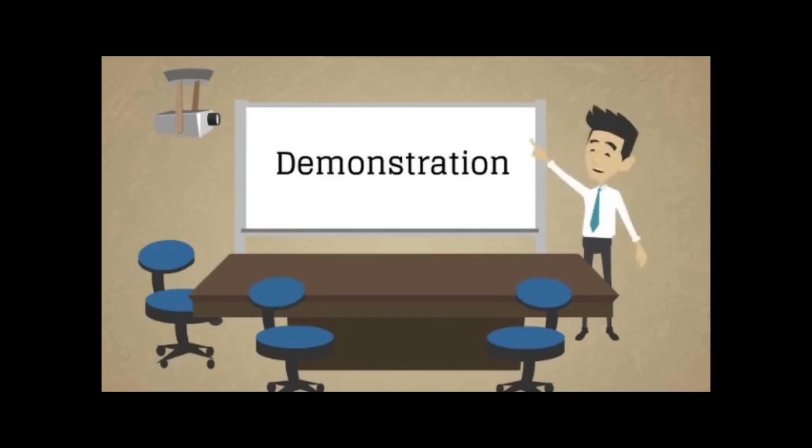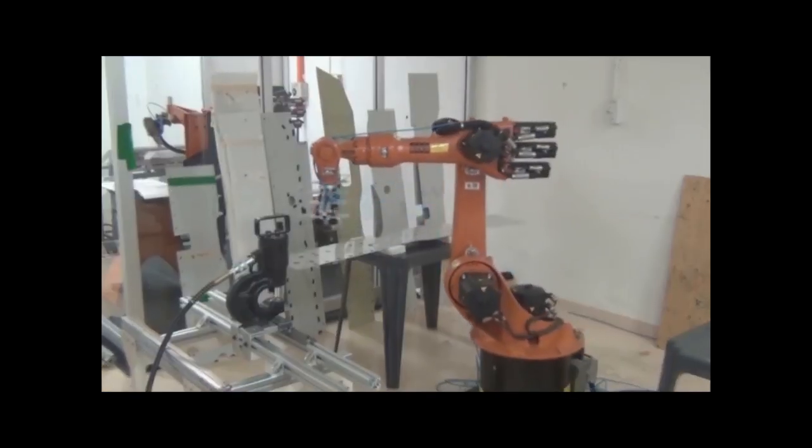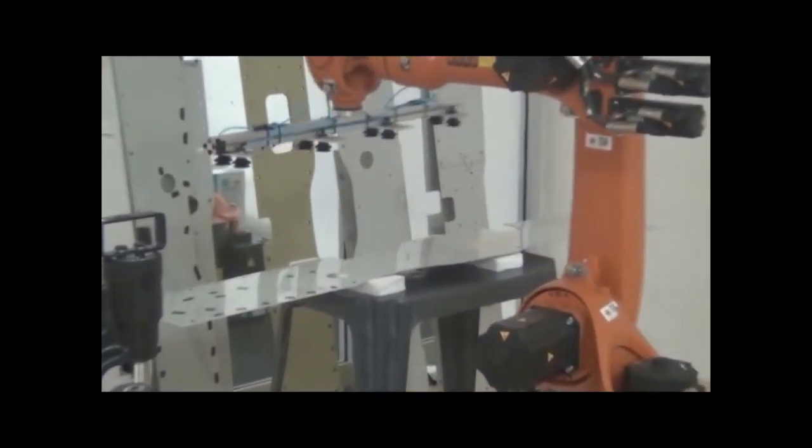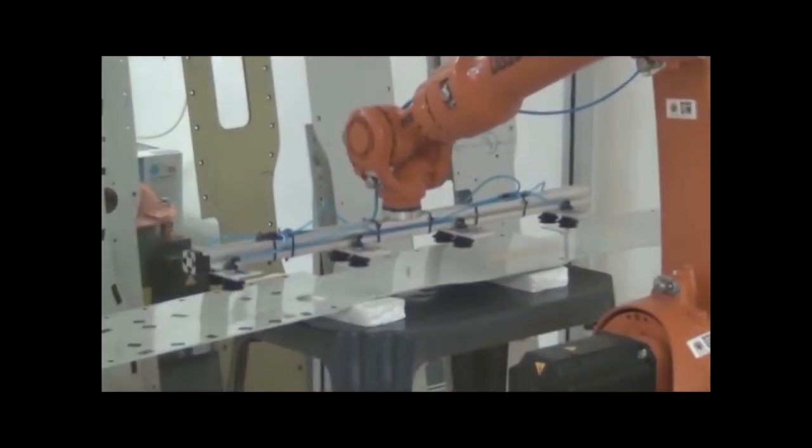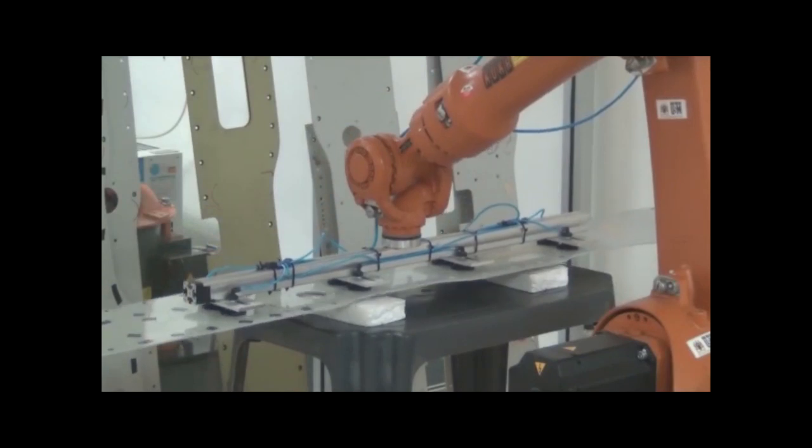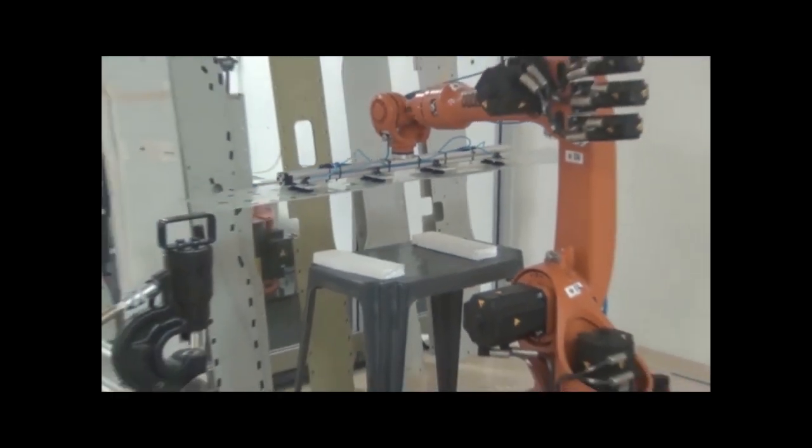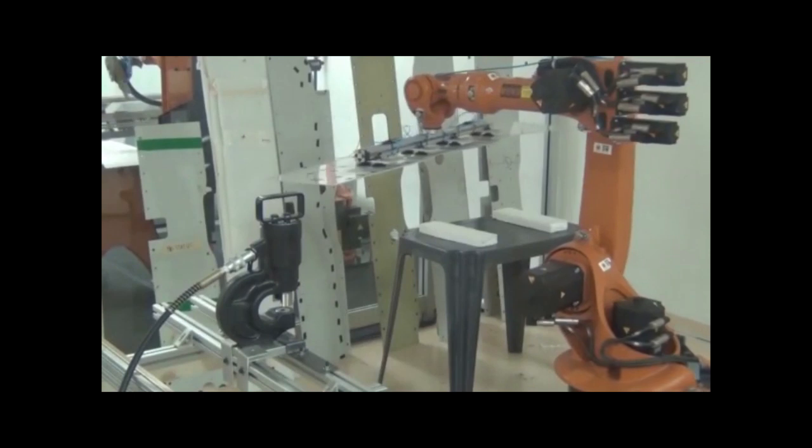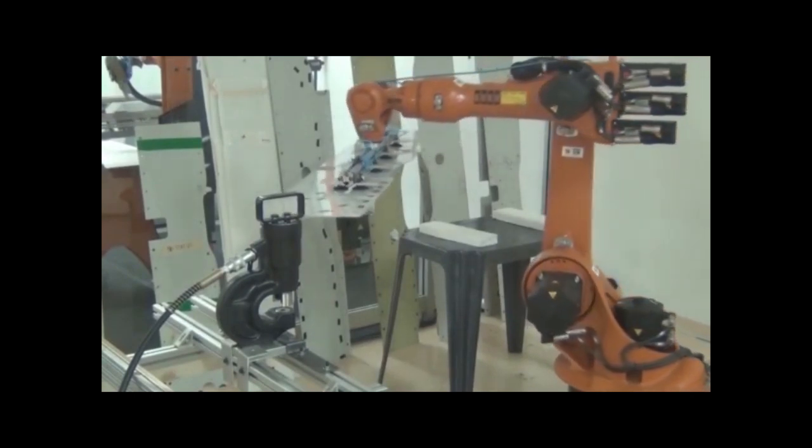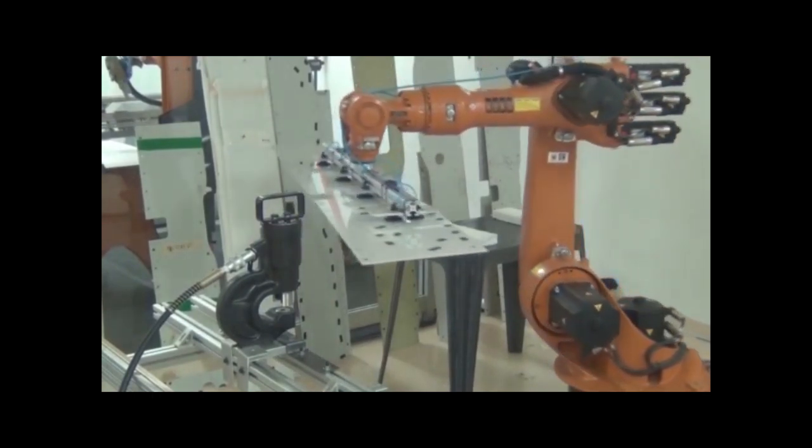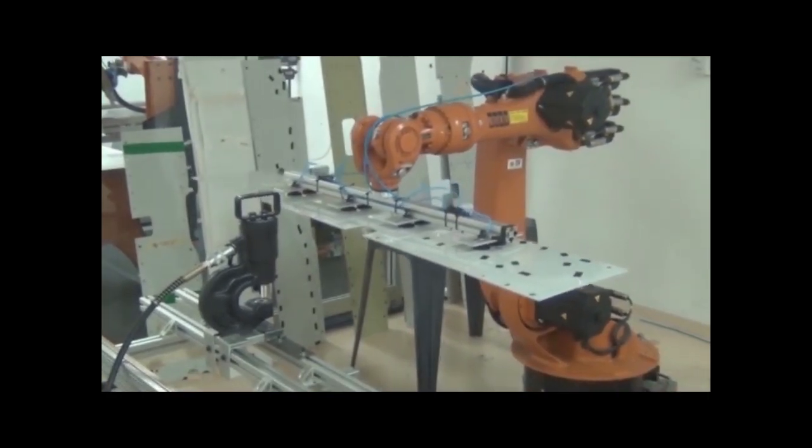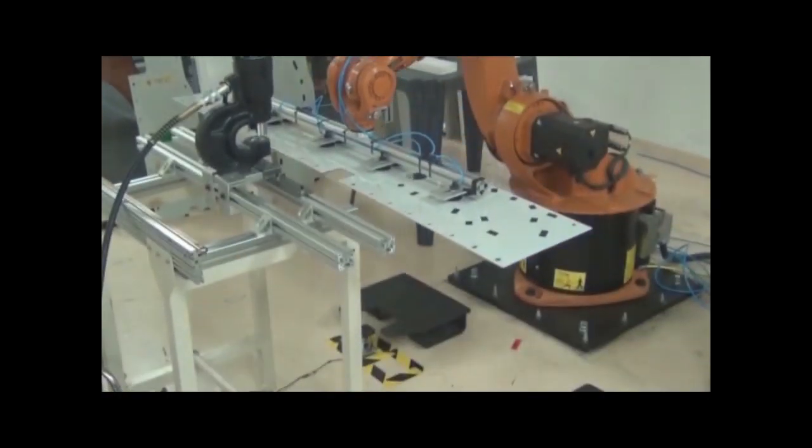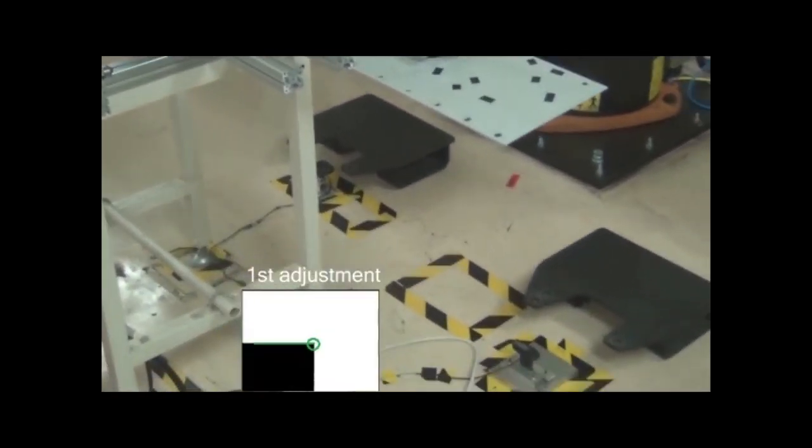First, robot's arm moves to unloading station to pick the workpiece. The workpiece used in this demonstration is composite panels. Next, robot's arm picks the composite panels near to the webcam camera to make calibration and adjustment on the composite panels. Webcam camera captures the image and processes the image using the embedded system built by Intel DE2i150. This is the first adjustment.